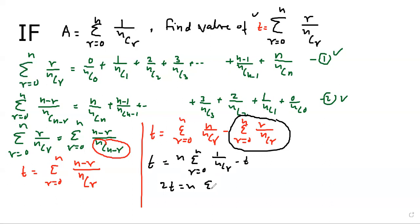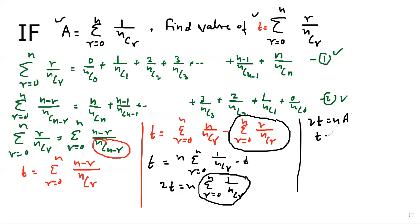We can see that 2t equals n times a, so t equals na by 2. This is the key result for this type of question. When you see a summation with r upon nCr, replace r with n minus r — the series remains unchanged — and use this property to solve similar questions.